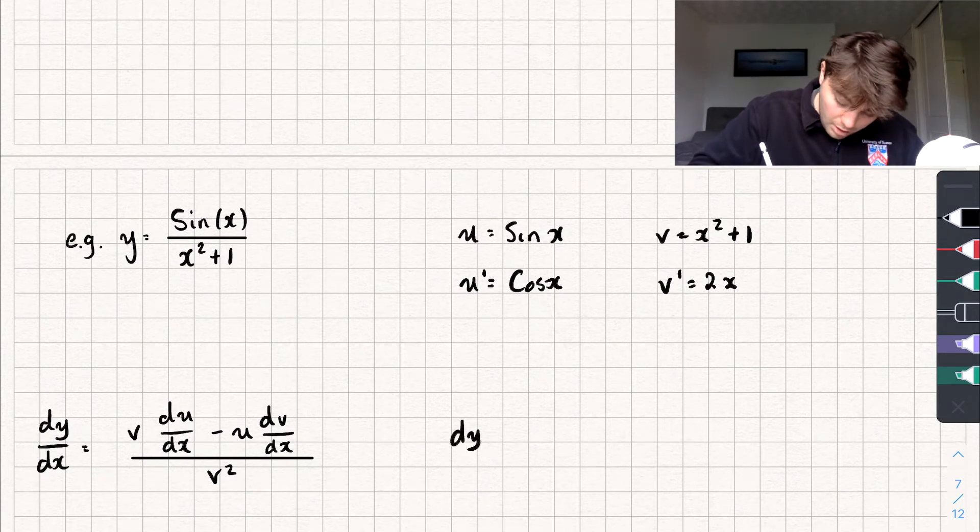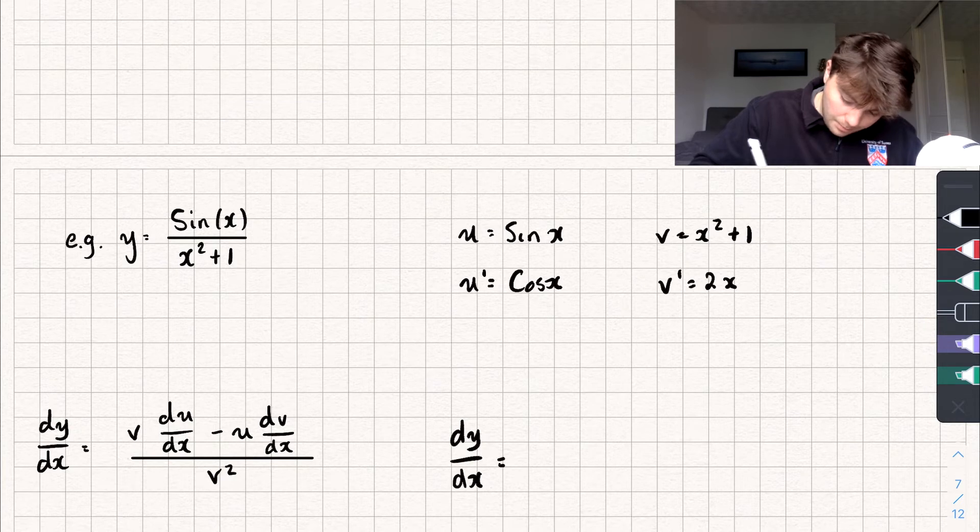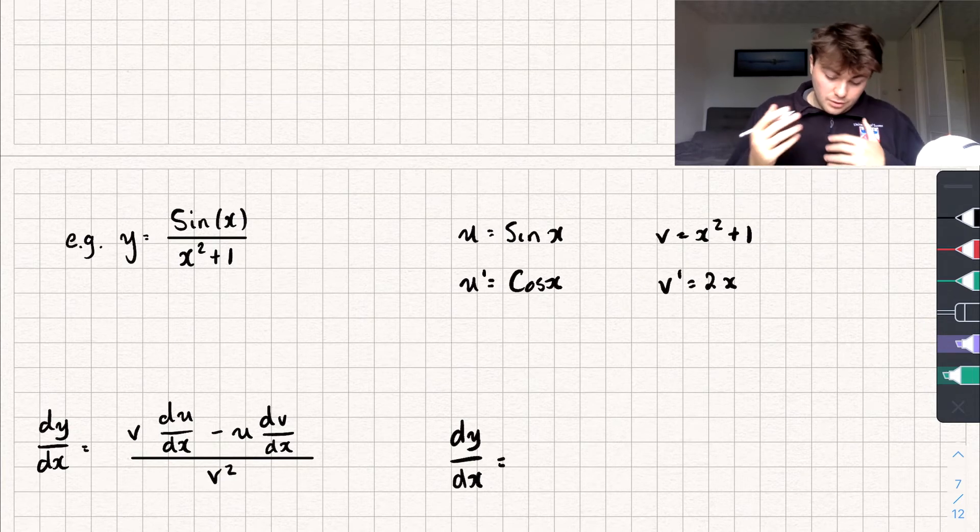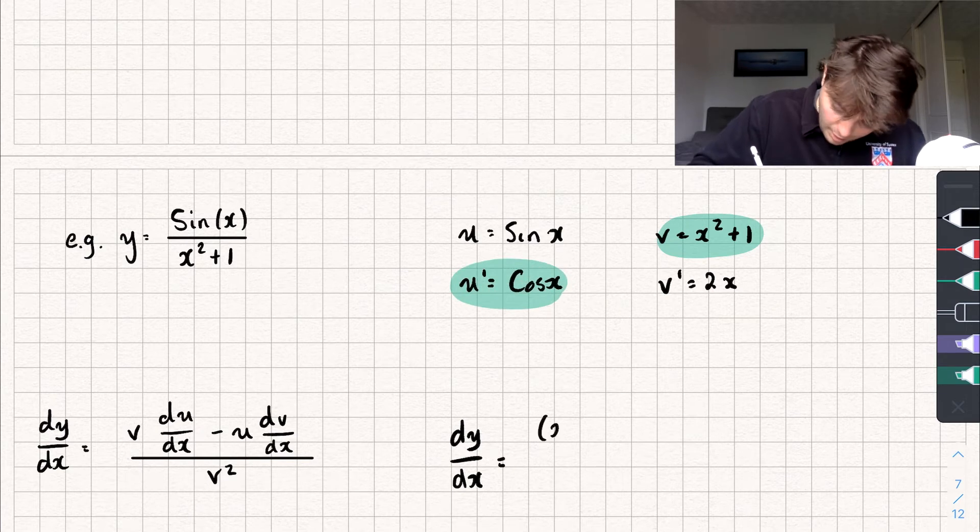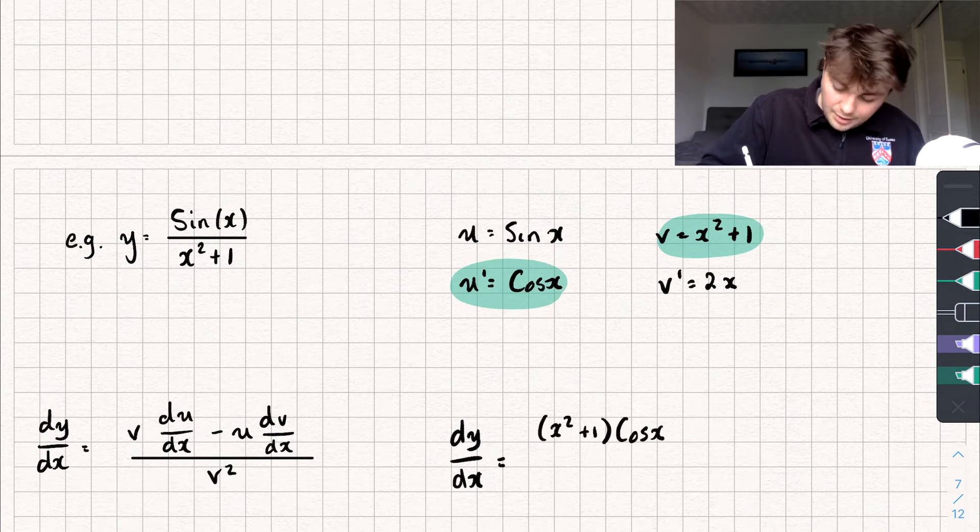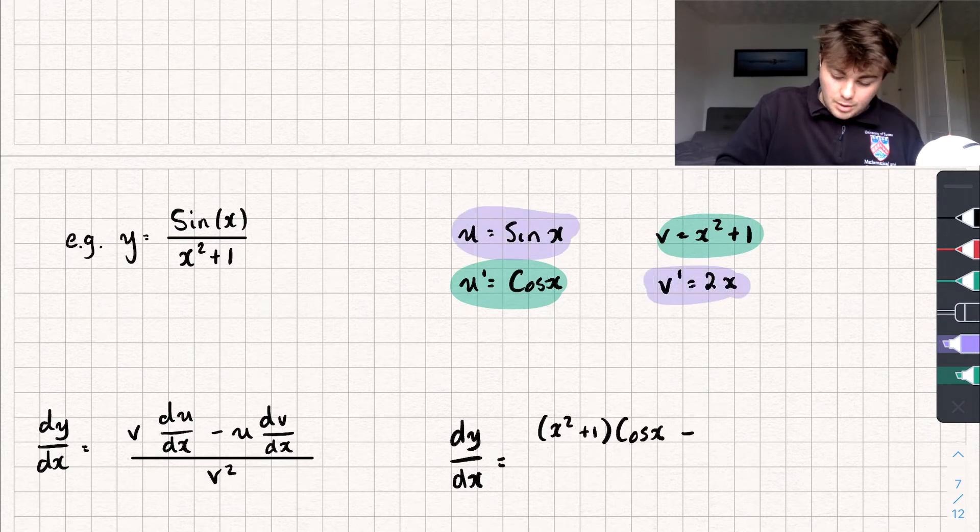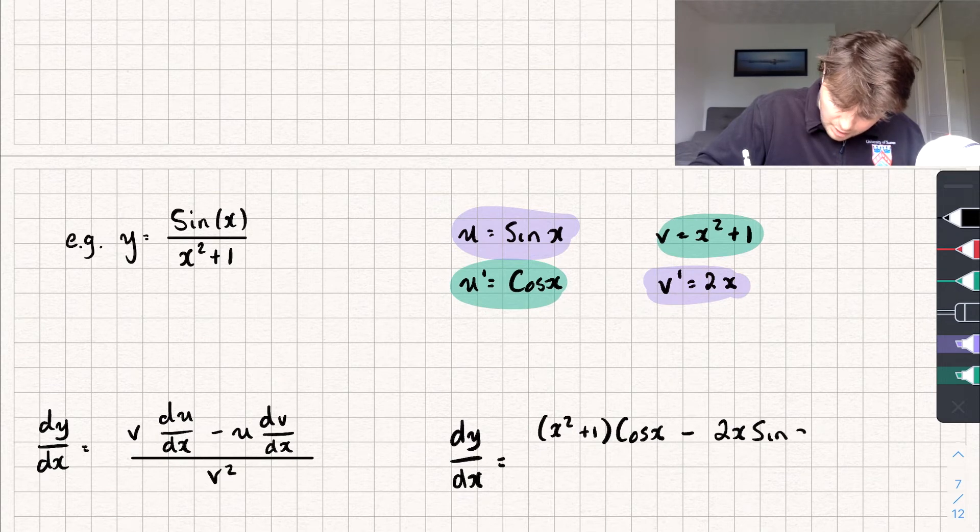And so it says we've got to do function v multiplied by the derivative of u. So we're going to get (x squared plus 1) multiplied by cos x. And then I'm going to subtract from that function u multiplied by the derivative of function v. So subtract 2x multiplied by sin x.